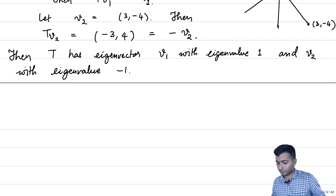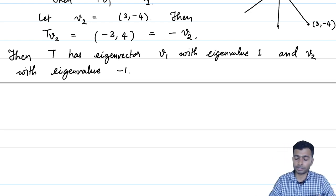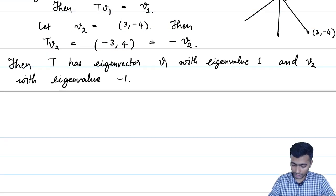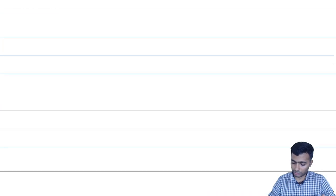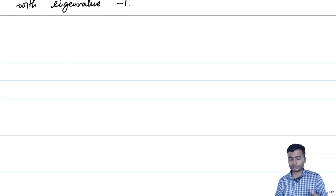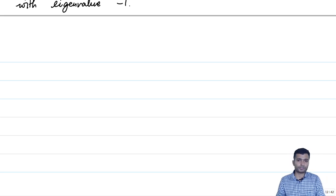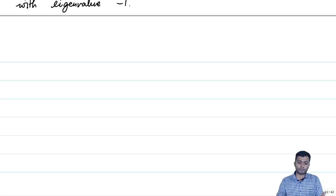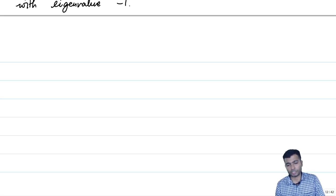We will revisit this example later. Keep the reflection example in mind while studying eigenvalues and eigenvectors. Next, since linear transformations and matrices are closely related, we would like to define a corresponding notion of eigenvectors and eigenvalues for matrices as well.